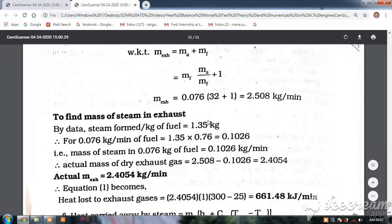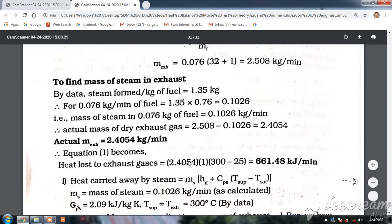To find the mass of steam in the exhaust, we are given that 1.35 kg of steam is formed per kg of fuel. Now it is only 0.076 kg per minute of fuel, so 1.35 × 0.76 = 0.1026. This is the amount of steam produced per 0.076 kg of fuel.